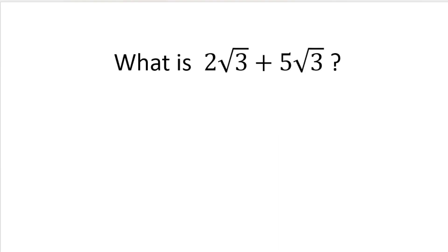So firstly, what is 2 root 3 plus 5 root 3? Well, we've got 2 lots of the root 3 and 5 lots of the root 3. So if we add those up, we're going to have 7 lots of root 3.